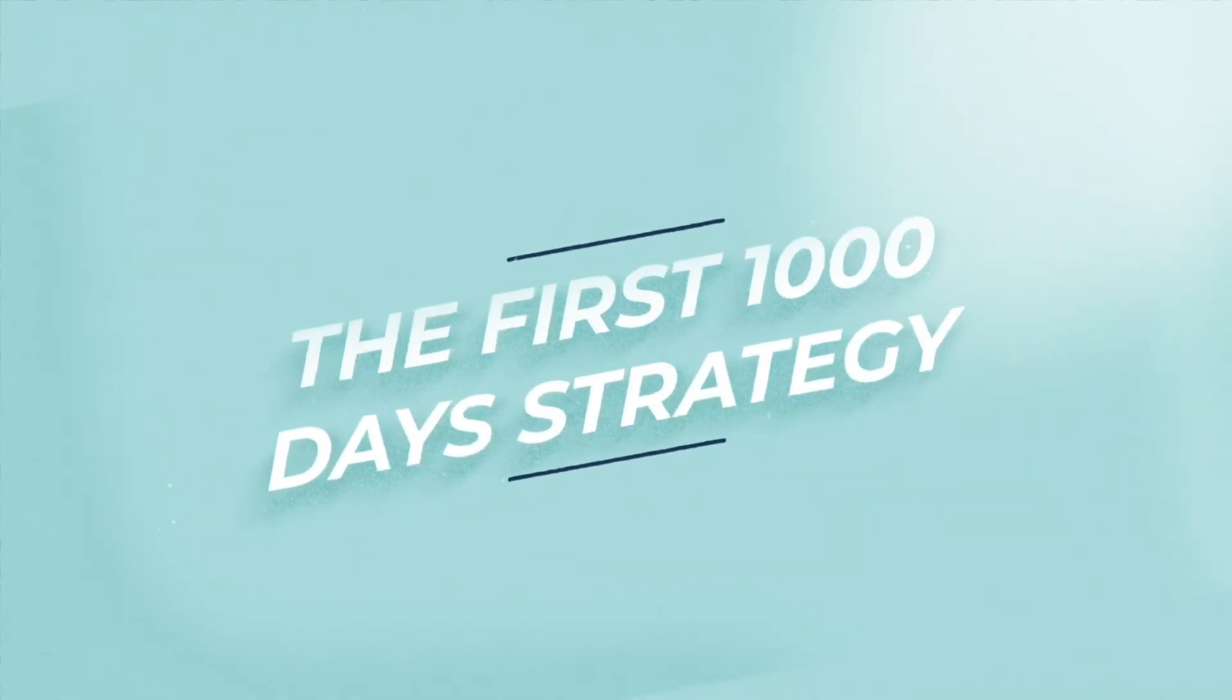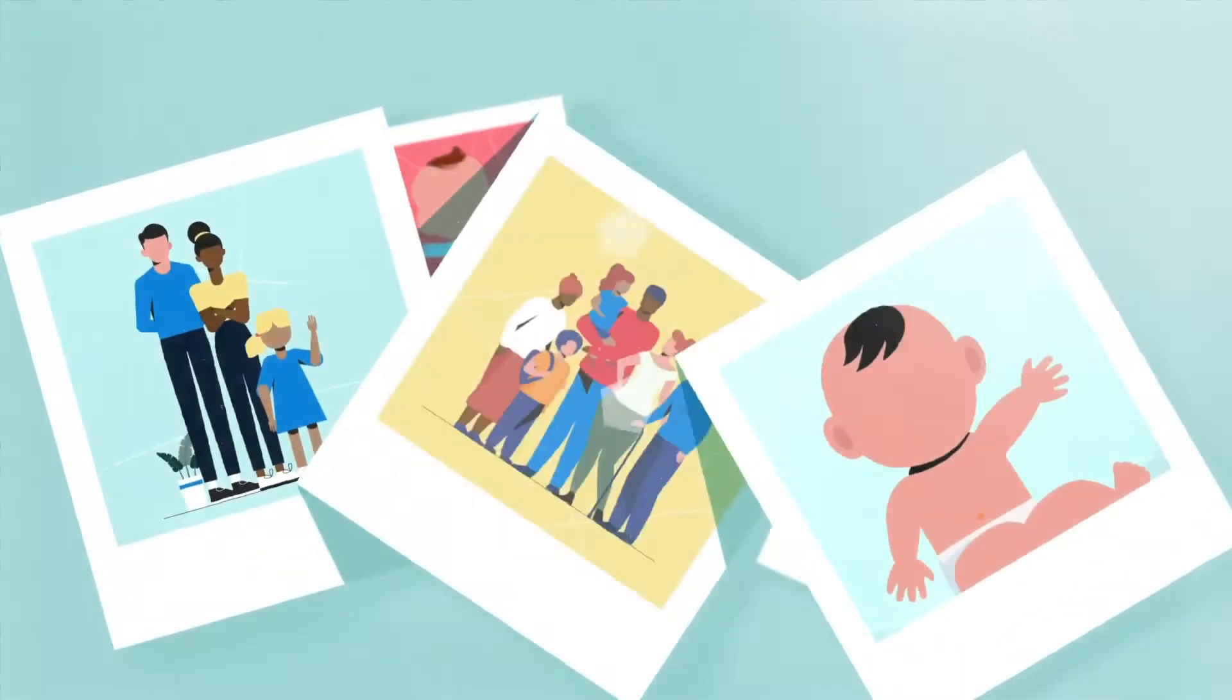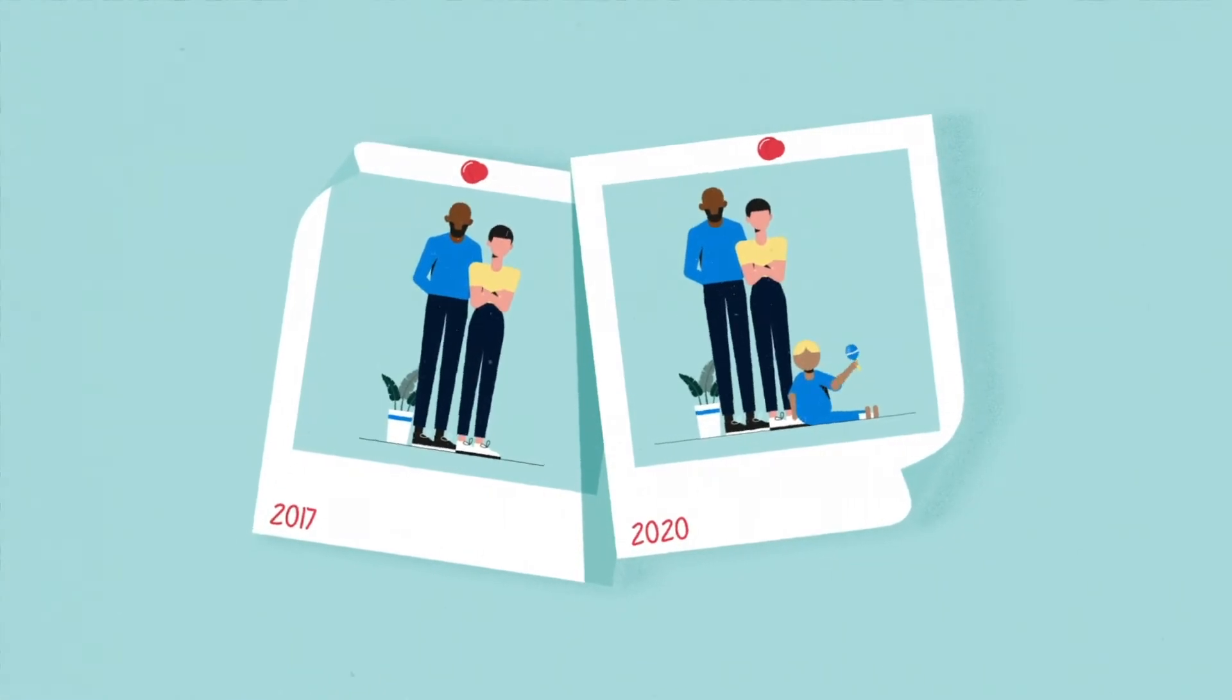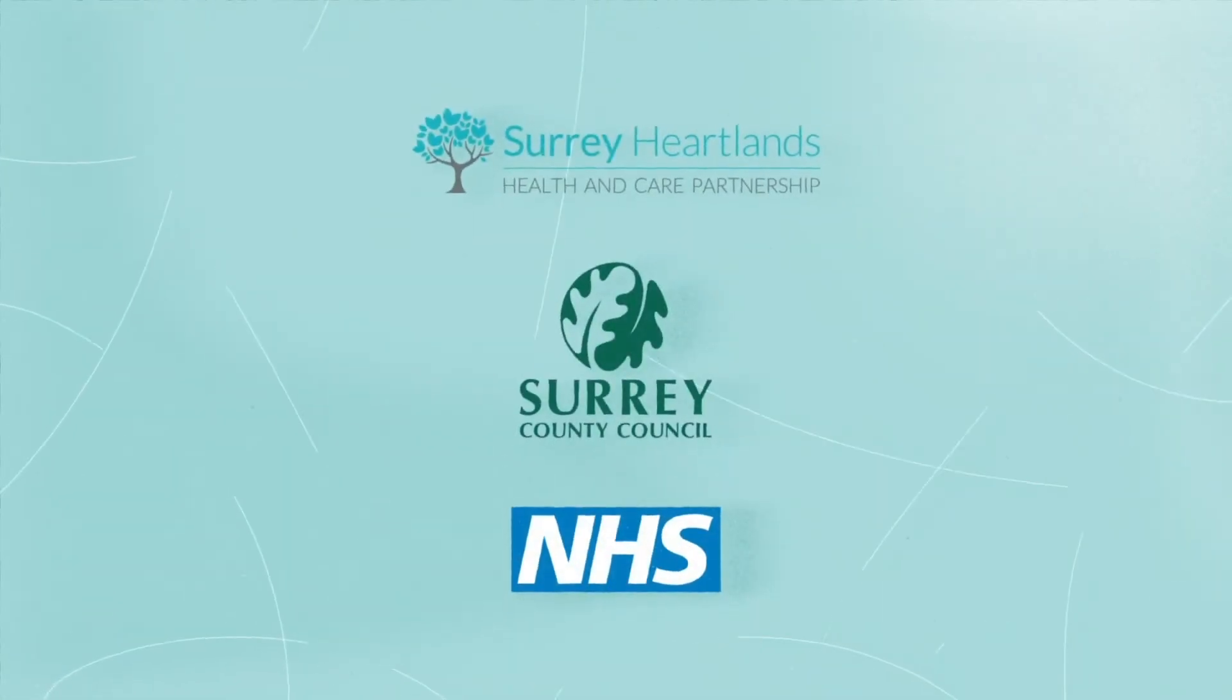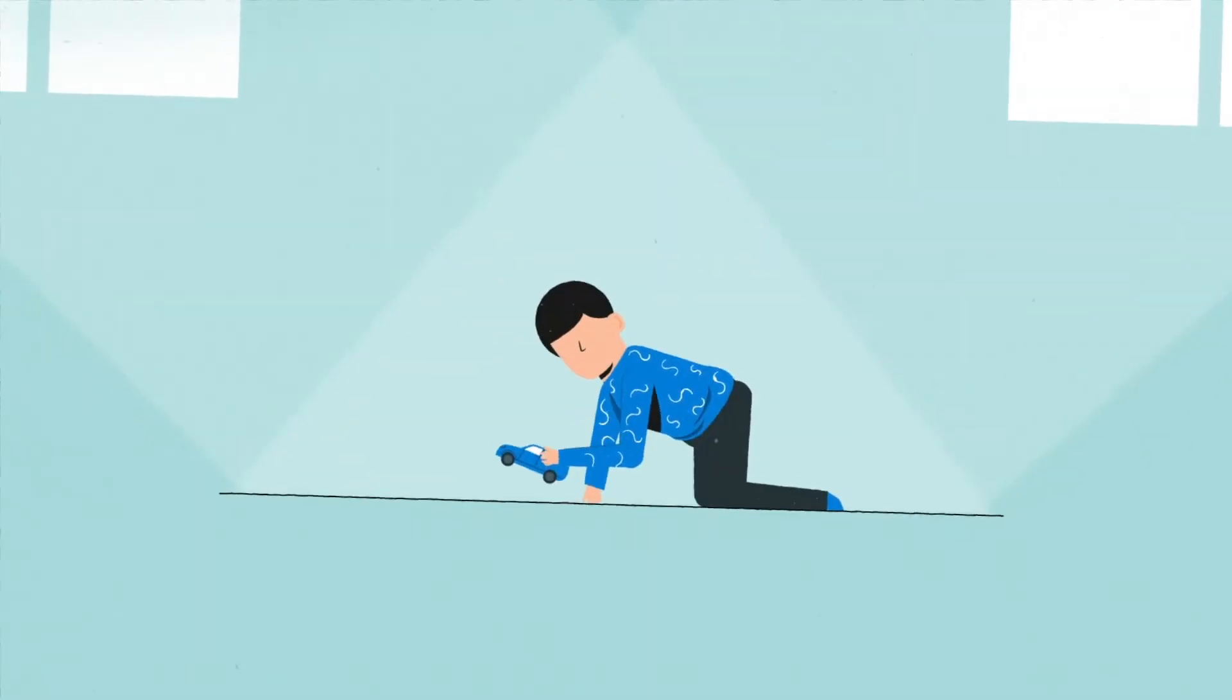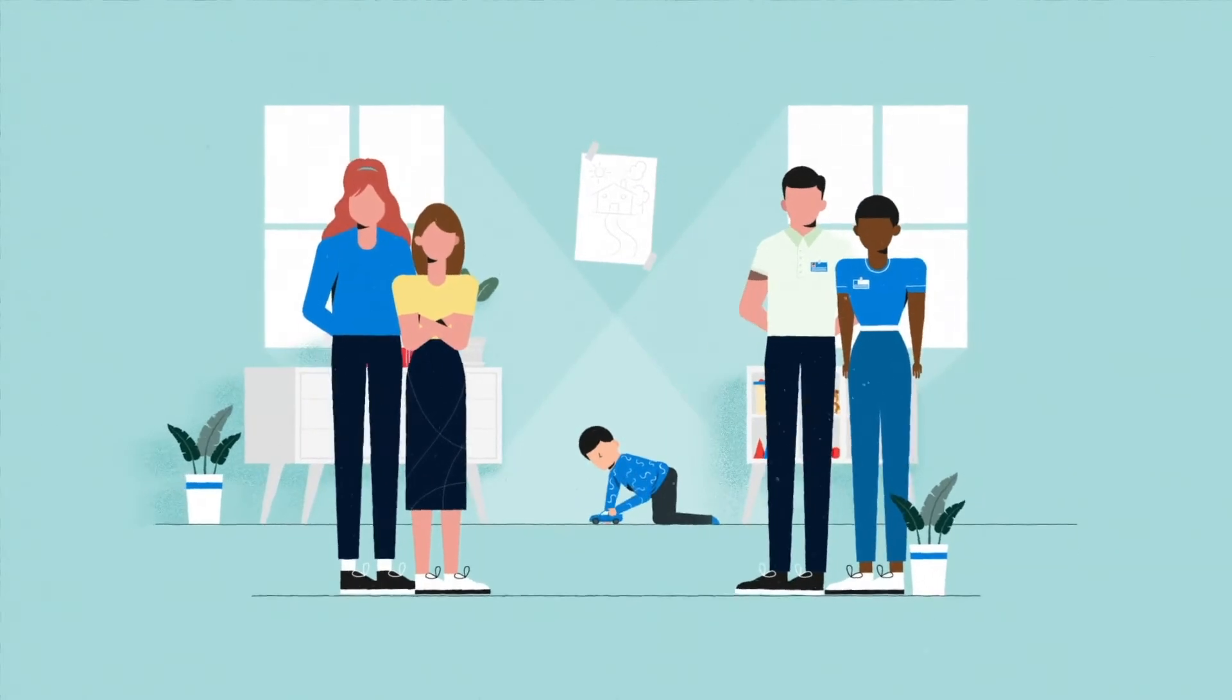The first 1,000 days strategy sets out a vision to support all of Surrey's children, their parents and wider families from the time of their conception to the age of two years. This strategy has been created by organisations from across Surrey that support children and families to enable every child in Surrey to have the best start in life.